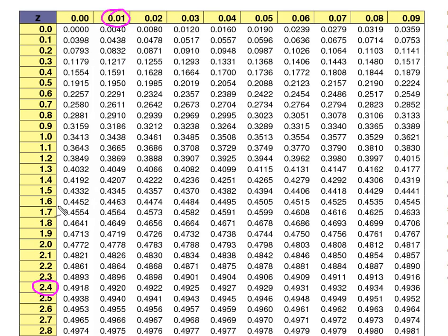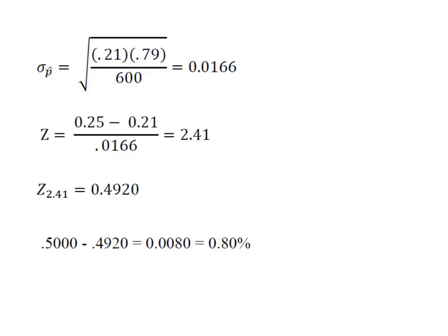And my z-score was 2.41. So I'm going to find the point at which that row and this column intersect. And so now I know that I have 0.4920 or 49.2% of the data is located between 2.4 standard deviations above the mean and the center of my distribution. And again, I've got my 49.2, but you'll recall from our picture,